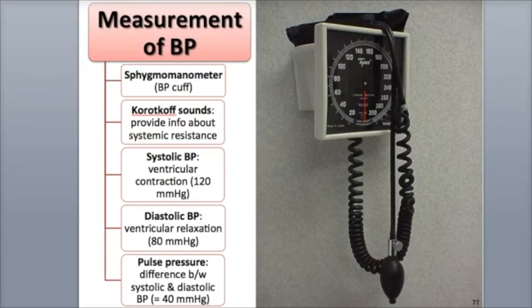Blood pressure is defined as the pressure in the arteries that is produced by the contraction of the left ventricle during systole, as well as the remaining arterial pressure when the ventricle is relaxing in diastole.